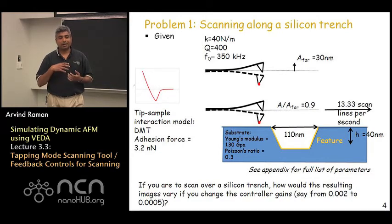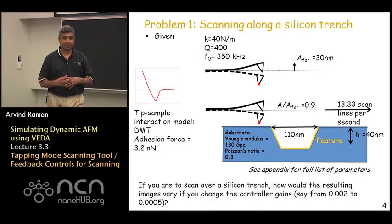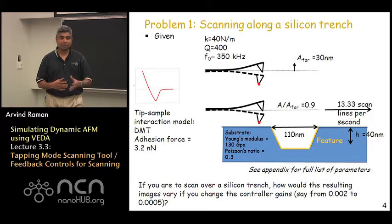However, in actual AFM systems there are all kinds of gains that are in between. So a number of 0.002 does not mean much in a real AFM system. The actual number in a real AFM system could be on a scale from 0 to 100.